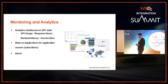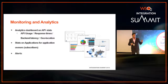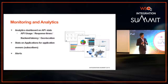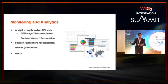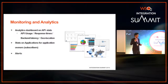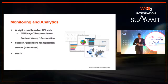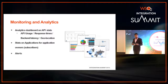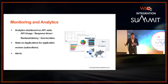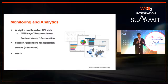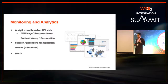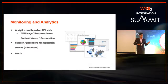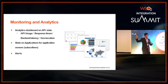For monitoring, API Manager supports both real-time and batch analytics, as well as operational analytics and business analytics. You can track API usage, response times, backend latency, and more under operational analytics. Under real-time analytics there are alerts — for example, if API Manager detects abnormal behavior of token usage, it can be configured to send an alert so you can act on it.